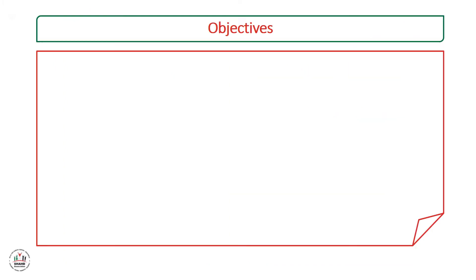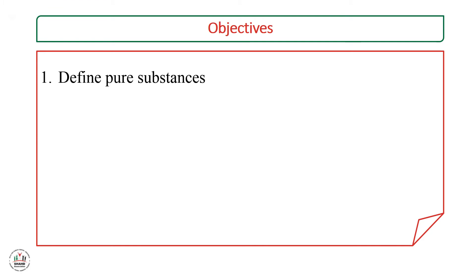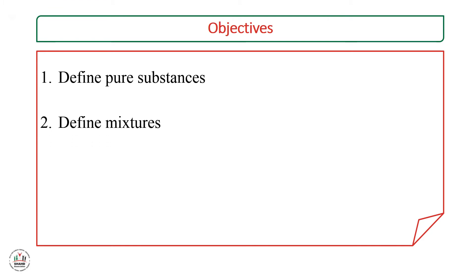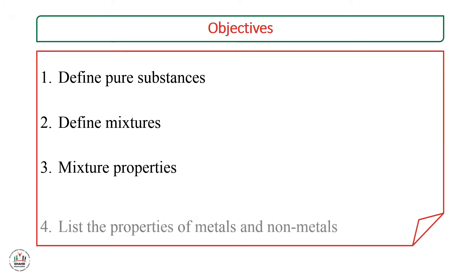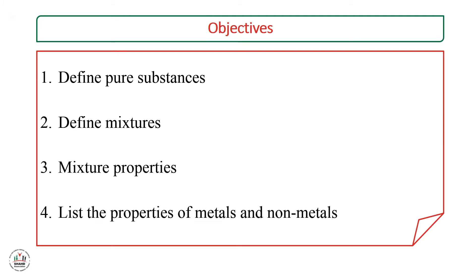In this lesson we have four objectives: we will define pure substances, we will define mixtures, we will list mixture properties, and finally we will list the properties of metals and non-metals.